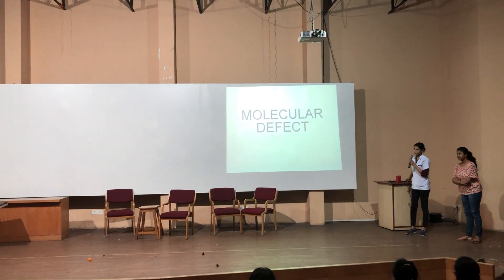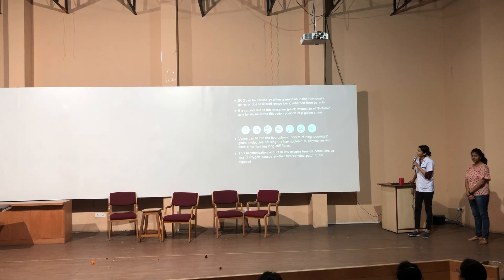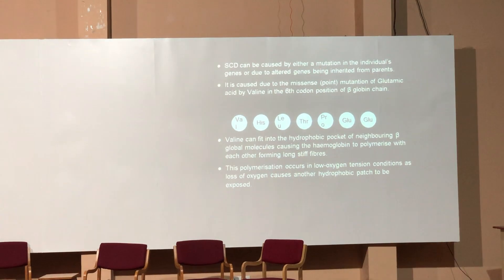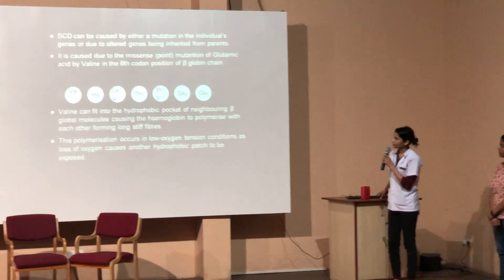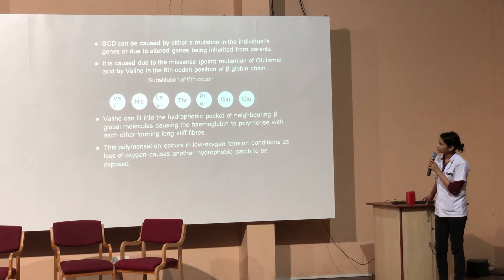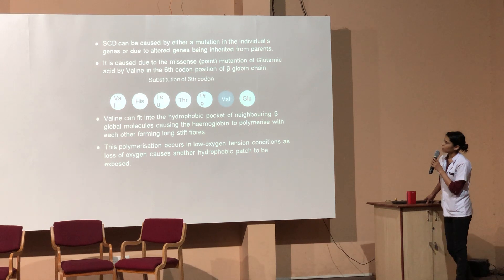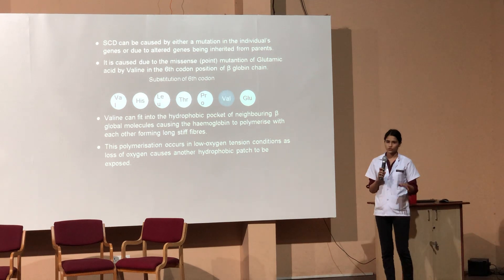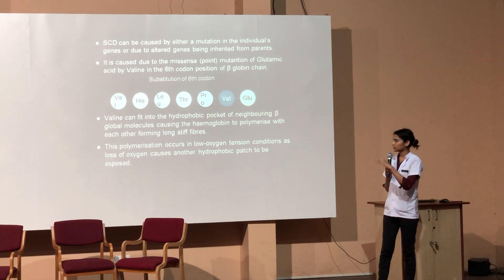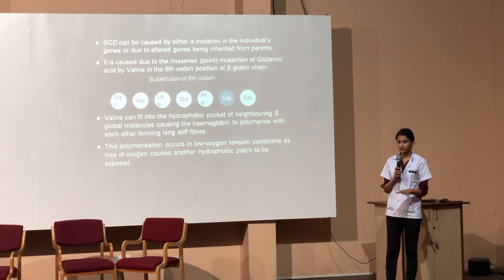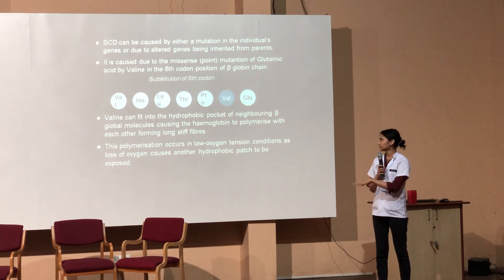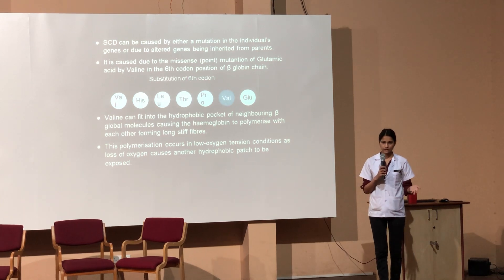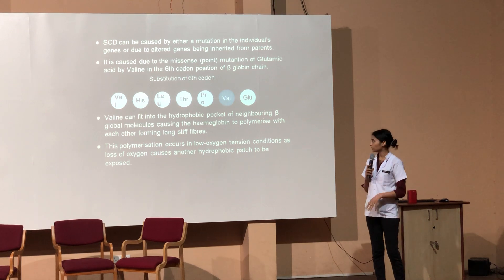The molecular basis of this defect: it can be caused by mutation or inherited from the parents. It is caused due to a missense point mutation of glutamic acid by valine. Inside the RBCs there is a water-like environment. Since glutamic acid is hydrophilic, it reacts with the environment inside the RBCs. But once it switches with valine, which is hydrophobic, the interaction between the RBC environment and the hemoglobin is reduced.